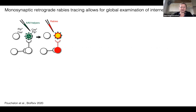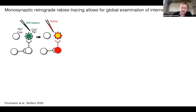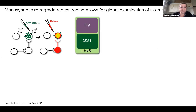To look at the afferents onto PV and SST cells, I used rabies tracing. This is possible by targeting with AAV helpers for the rabies in the specific population of interest. Rabies would then target specifically this population and allow for monosynaptic retrograde labeling. This is possible for PV and SST with Cre lines.